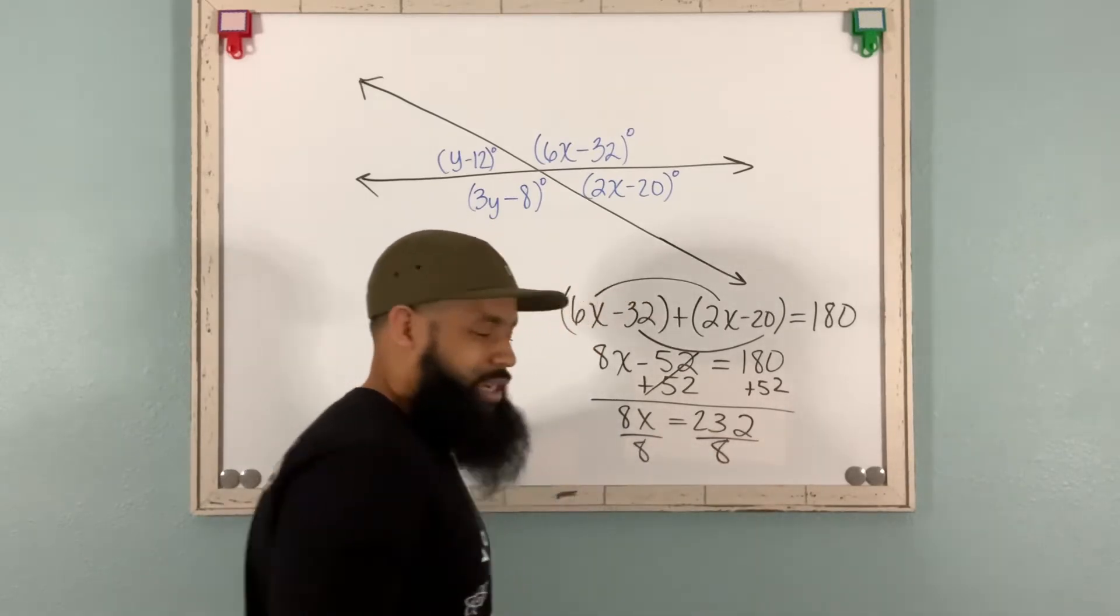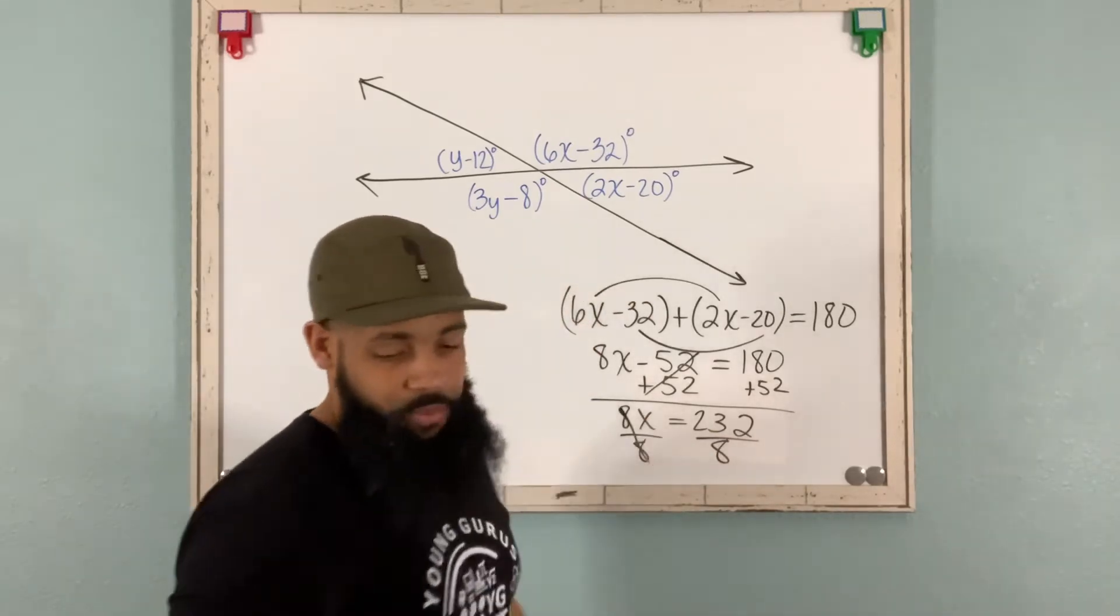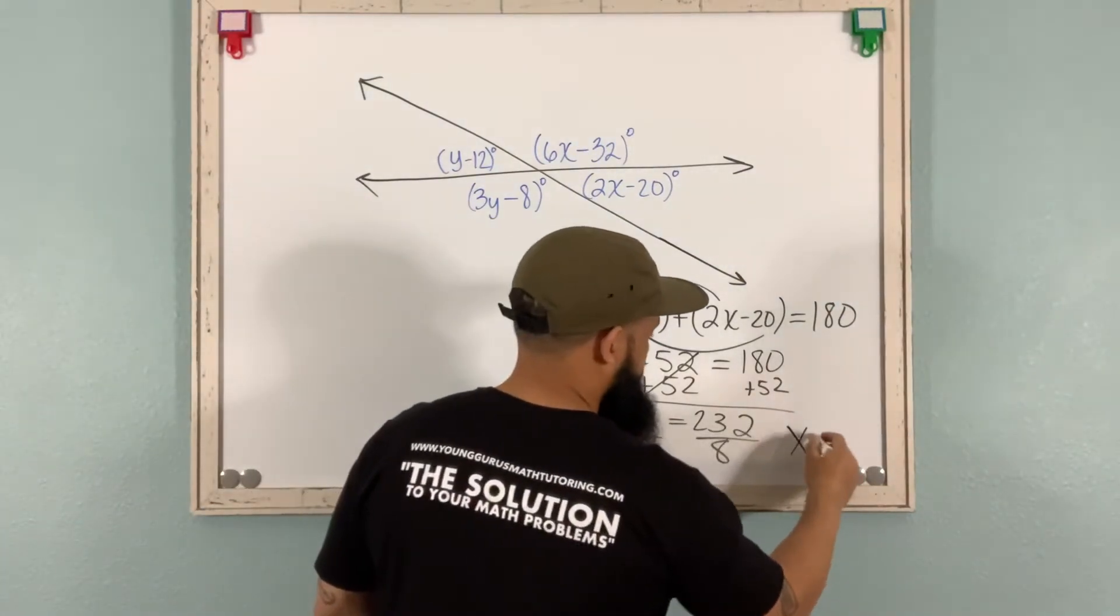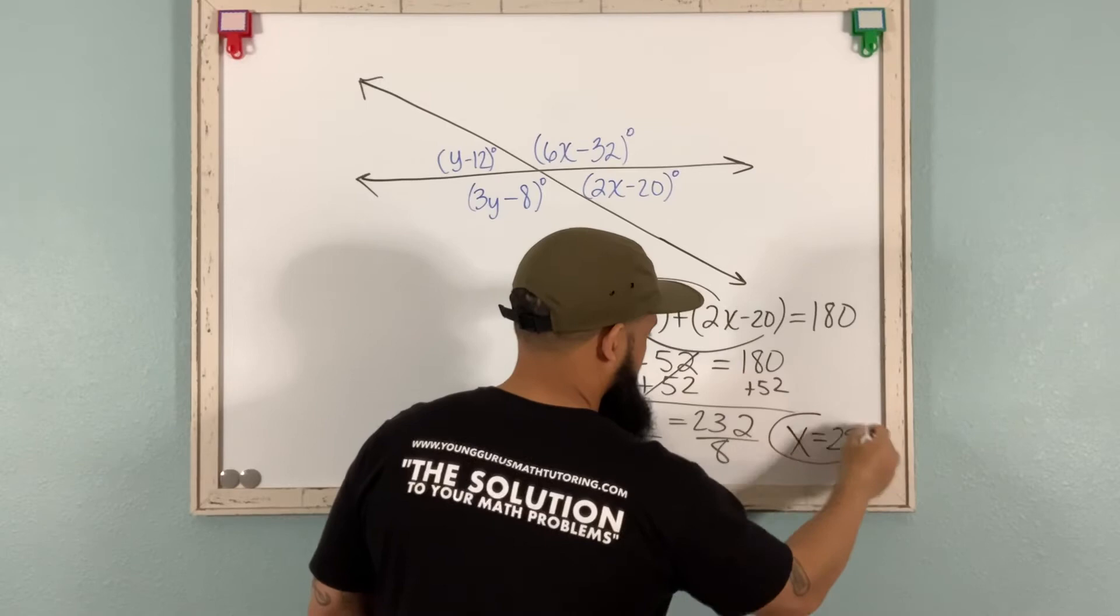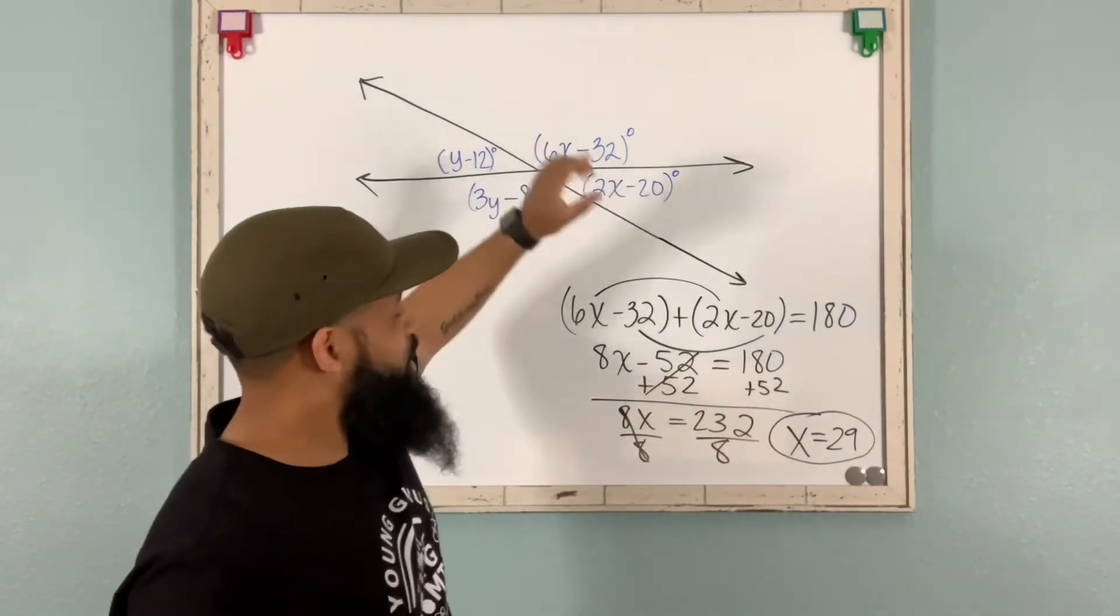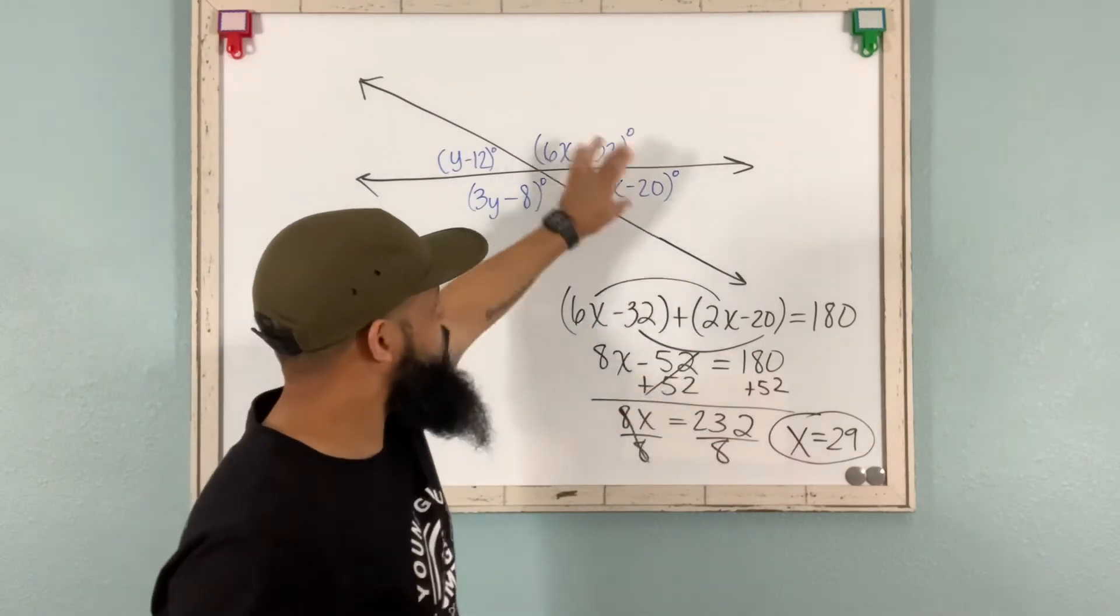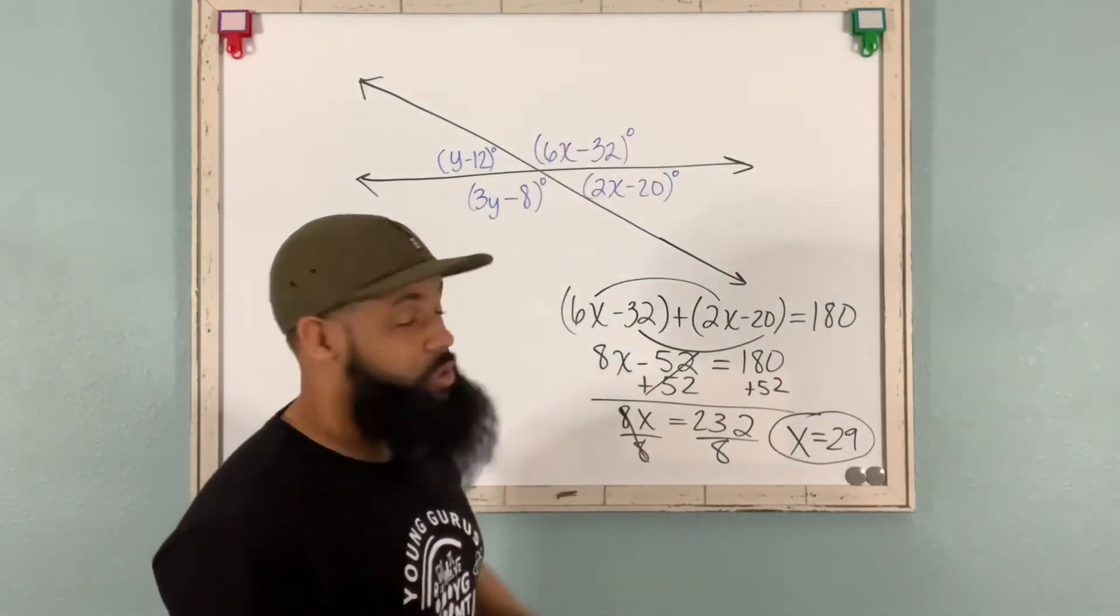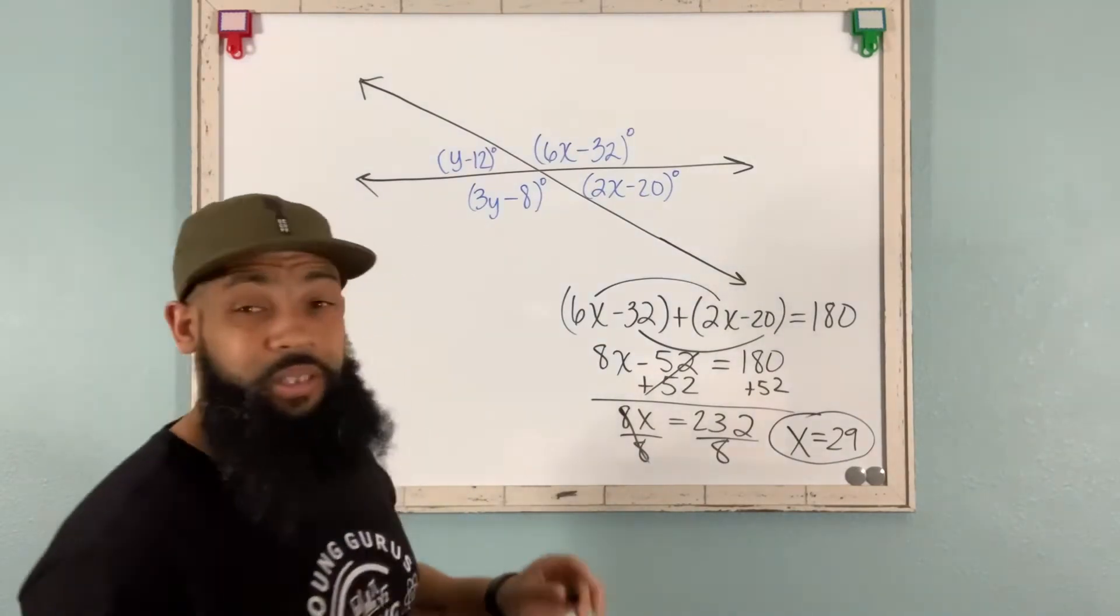And that's going to give us x equals 29. All right? So x equals 29. And just in case you want to double check by substituting that x here to make sure those values are going to end up with a sum of 180.